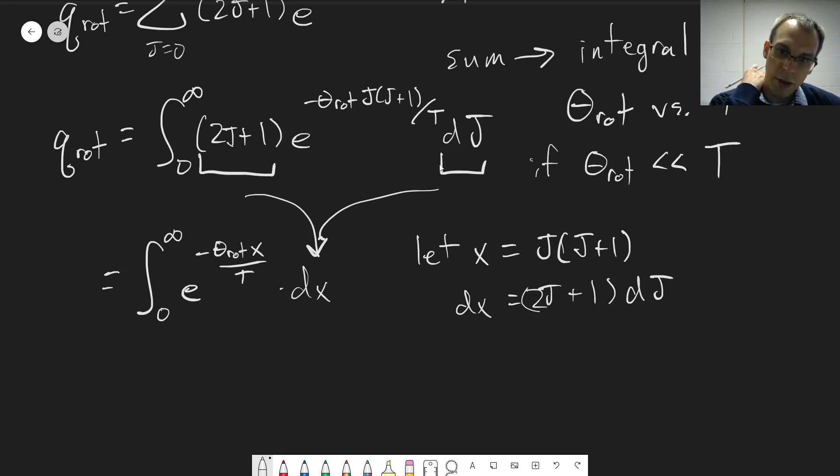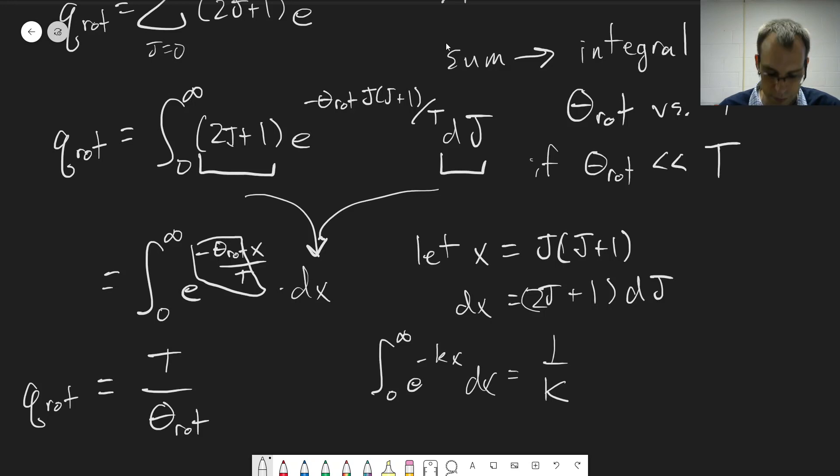You can look this up, but the integral from 0 to infinity of e to the minus kx is equal to 1 over k. And so this integral ends up having a pretty simple solution for q rot. q rot is just equal to the constant here. So it's equal to T over theta rot, or we can write those out as kBT over hB, depending on which way you want to use this. Okay, and so that is our expression for the rotational partition function.